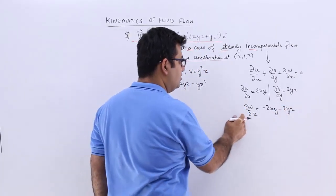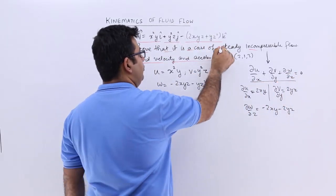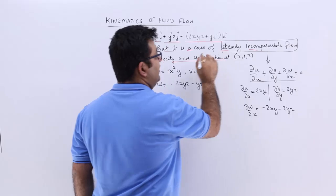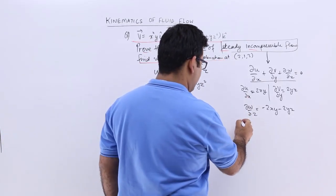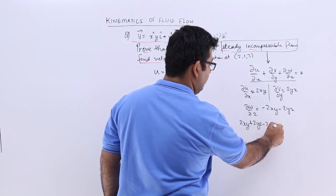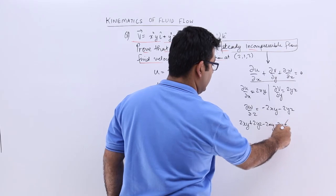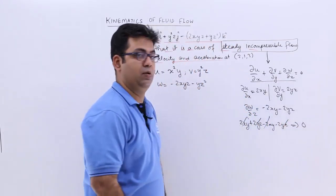So now add all these three and you need to get 0, and then you will be able to prove that this flow is steady incompressible. So when you add you get 2xy + 2yz - 2xy - 2yz, all this cancels off and you get 0.